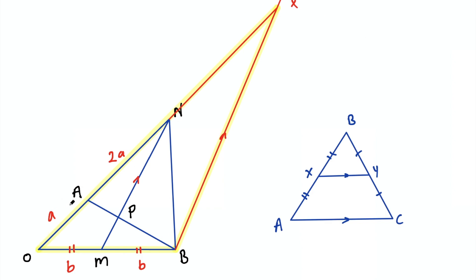So if we're calling OA as A and AN as 2A then this entire length is 3A, then NX will also be 3A because as we said this line MN must cut both sides of that triangle in half.